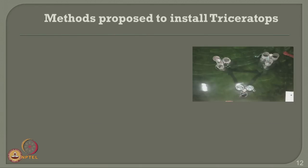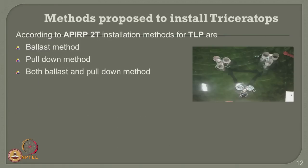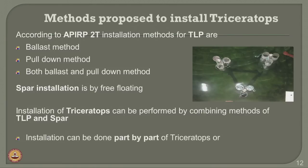There are different methods by which a triceratops can be installed. According to AP RP2T, installation methods for TLP are: ballast method, pull-down method, or a combination of both. SPAR is generally installed by a free-floating concept. Since triceratops is a hybrid combination of SPAR and TLP, it is installed by combining the methods of both. Therefore, installation is done part by part, which is very advantageous compared to any other classical installation procedures of offshore platforms.